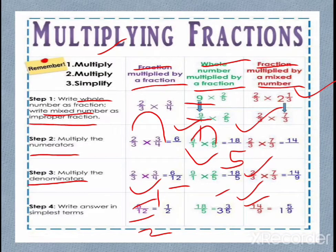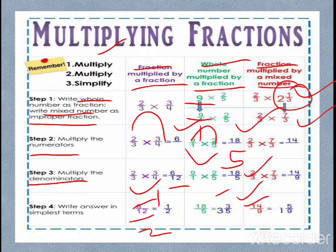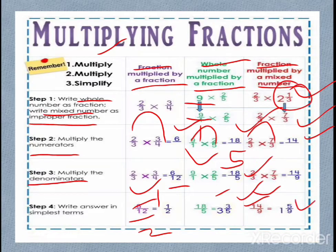Next example with a mixed number: first we convert the mixed number — for example, 2 and 1/3: multiply 3 × 2 = 6, plus 1 = 7, giving the improper fraction 7/3. Then multiply numerators: 7 × 2 = 14, and denominators: 3 × 3 = 9. The result is 14/9. Converting to mixed form: 9 × 1 = 9, with 5 left over — so the answer is 1 and 5/9.